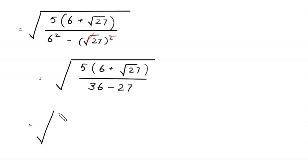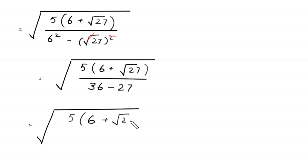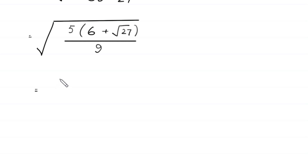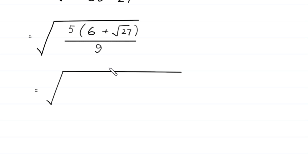So we have the square root of 5 times (6 plus square root of 27) divided by 36 minus 27. Since 36 minus 27 equals 9, the denominator simplifies to 9. We then multiply and divide this expression by 2.